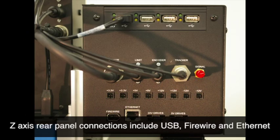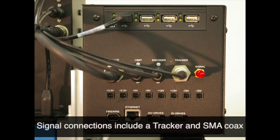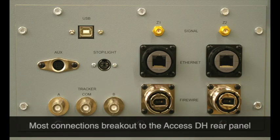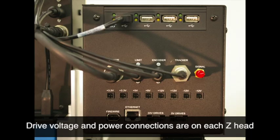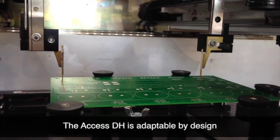On the rear panel of the Z-axis assemblies are multiple communication connections such as USB, Ethernet, and firewire. Probe connections include a shielded coax connector that can connect to an internally installed Huntron tracker, and an SMA-style connector that breaks out to the prober rear panel via a high-frequency shielded coax cable. Drive voltage and power connections are also available on the Z-axis rear panel to allow for custom hardware to be mounted and powered directly on the probe head. The AXS DH is adaptable by design.